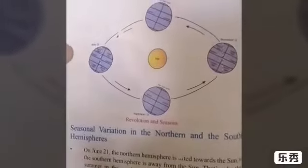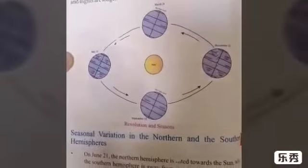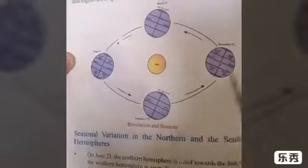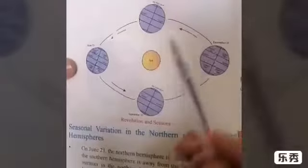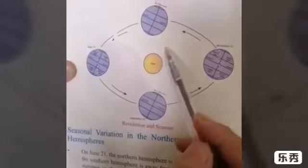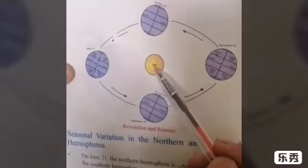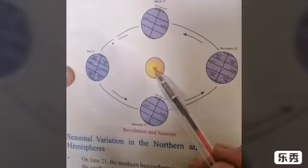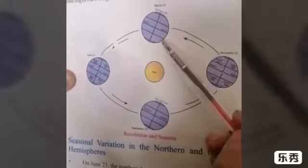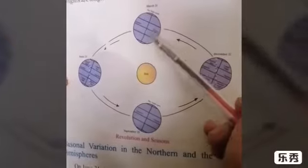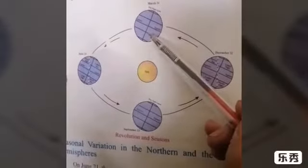Seasons are formed due to the revolution of the earth, but it happens due to the tilt of the earth toward the sun. The area which is tilted toward the sun during the revolution experiences summer, and the area which is far away from the sun experiences winter.